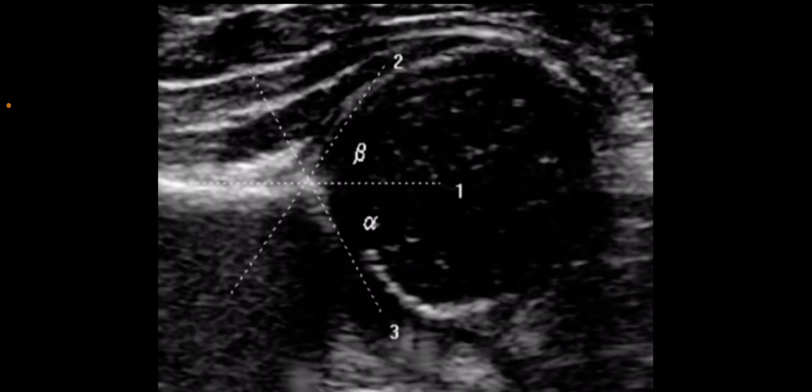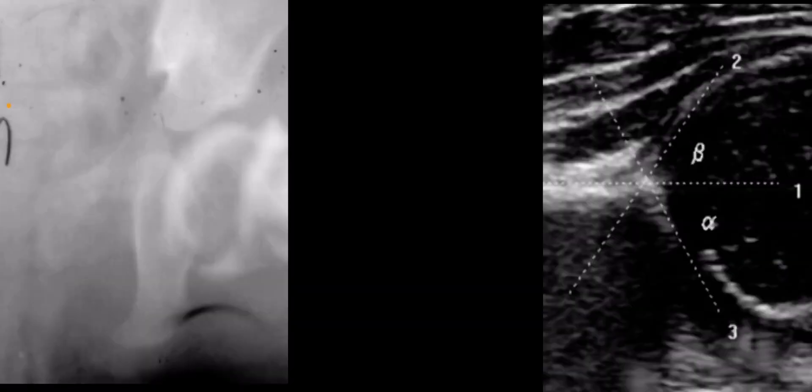In the older infant with DDH, the labrum may be inverted and may mechanically block concentric reduction of the hip. Inverted limbus represents a pathologic response of the acetabulum to abnormal pressures caused by superior migration of the femoral head, consisting of fibrous tissue. Hip capsule is constricted by iliopsoas tendon causing hourglass deformity of the capsule. Pulvinar: fibro-fatty tissue within the acetabulum that can act as a block to reduction.